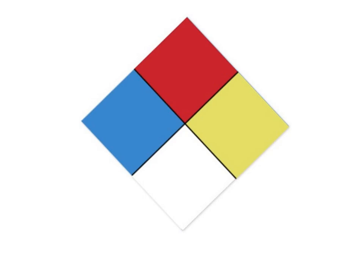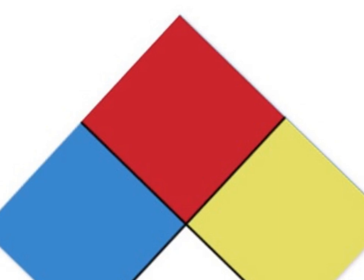Starting at the top, we have the red quadrant. This quadrant represents how flammable the substance is. At 0, these are substances that will not burn, such as sand or rock. At 4, these are substances which will rapidly ignite under standard temperature and pressure, such as powdered uranium.